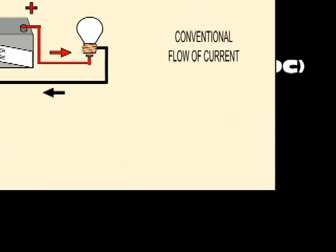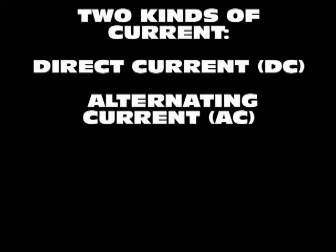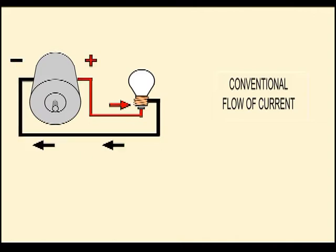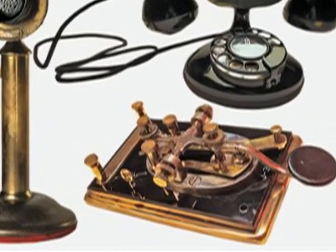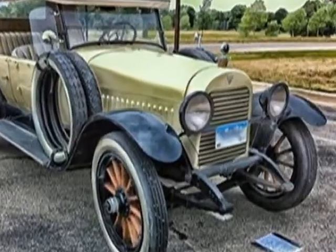There are two classifications for electric current. One is direct current, in which electrons always move in the same direction through the conductor. The second is alternating current, in which electrons move first in one direction and then in the opposite direction, at a rate set by the generator producing it. Direct current was the first form of electricity used by man — it was used to power the telegraph, home lighting, as well as automotive electrical systems.